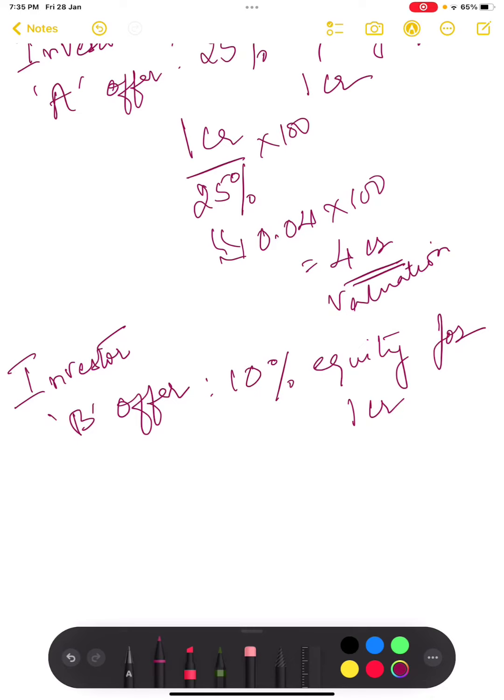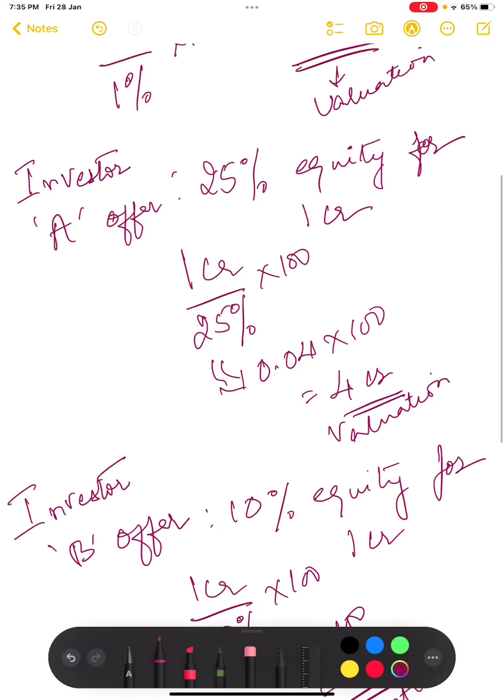So 1 crore divided by 0.1 into 100 equals 10 crore. This would be your valuation. This is the calculation which will help you to calculate the company's valuation so easily. See you next time.